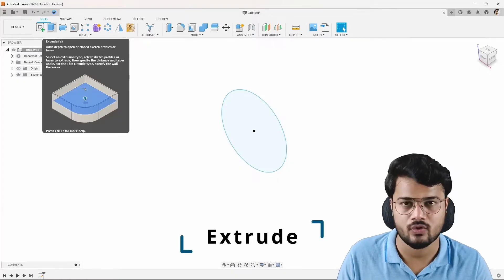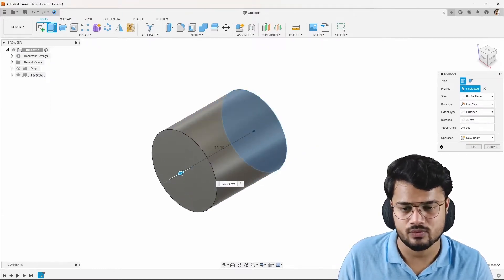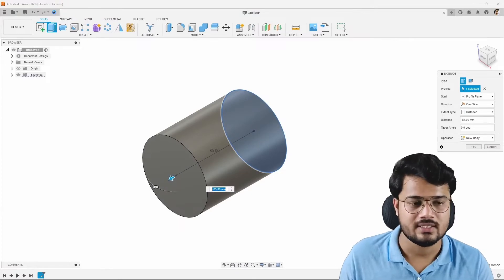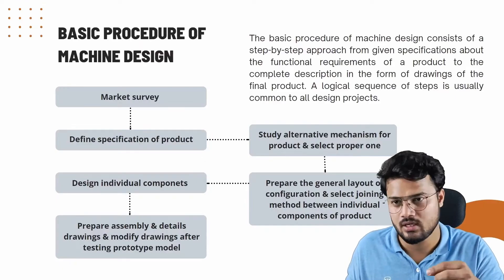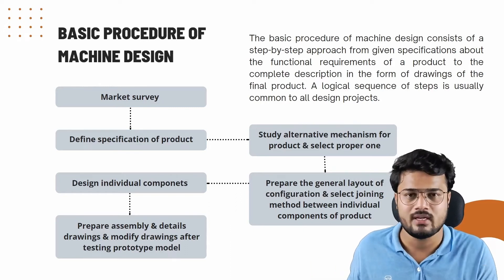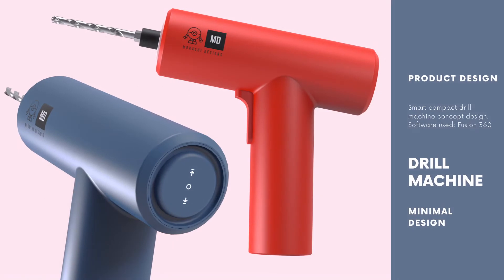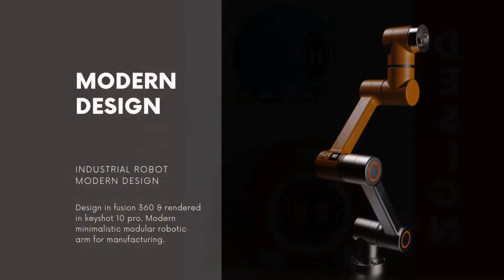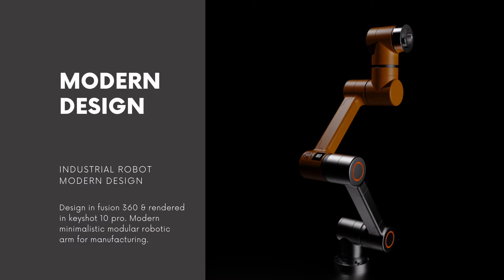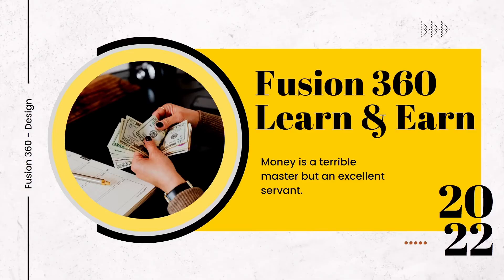But don't worry — I considered all these issues and tried to build this course as interesting as possible. In this course, we will learn Fusion 360 software with its 2D and 3D commands. Then we will learn the product design process, because no one is born creative — that's why there is a step-by-step process to create a design. After that, we will create five eye-catching 3D designs with photorealistic rendering. Then I'll show you how to create a nice portfolio in Canva for marketing. Once everything is done, I'll tell you seven different ways to earn money from these skills.